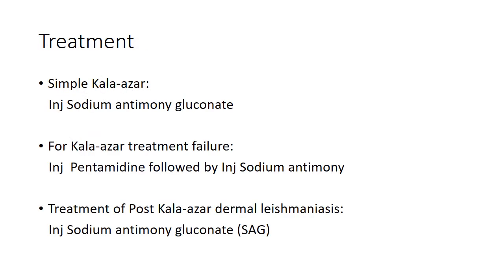Simple Kala-azar can be treated by injection sodium antimony gluconate, 20 mg per kg IM daily for 20 days, but the dose should not exceed more than 850 mg per day. For treatment failure, injection pentamidine can be given around 4 mg per kg IM 3 times a week for 5 weeks, a total of 15 injections, followed by injection sodium antimony gluconate 20 mg per kg daily for 30 days. Post Kala-azar dermal leishmaniasis can be treated by injection sodium antimony gluconate 20 mg per kg daily for 20 days, with 6 cycles and an interval of 10 days between each cycle.